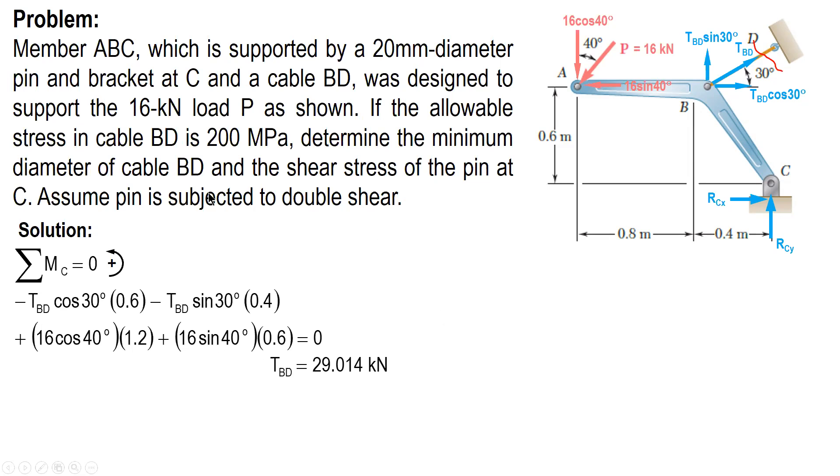So with this value, we can solve for the diameter. The diameter of cable BD, we use the formula of normal stress. So it's force over area. And stress is given, force is given. So for the area, and you solve for D using your calculator, minimum diameter is 13.6 millimeters. Or if you want a whole or an integer value, the value should be 14, the bigger one. 14 millimeters and not 13 millimeters. But this one is acceptable.